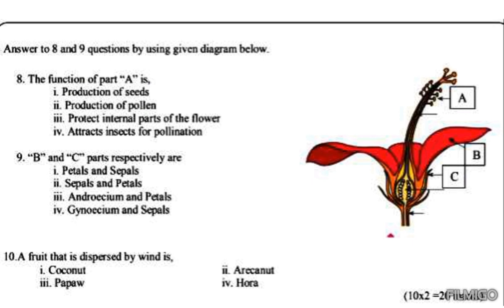The function of androecium is production of pollen. So the answer for the eighth one should be the second one: production of pollen. Question nine: B and C parts respectively are? B is petals and C is sepals. Answer should be first one.